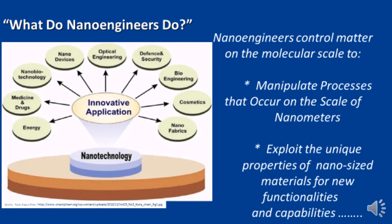What do nanoengineers do? Nanoengineers control matter on the molecular scale to manipulate processes that occur on the scale of nanometers and exploit the unique properties of nano-sized materials for new functionalities and capabilities.